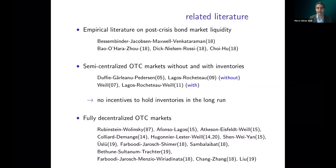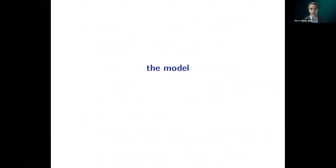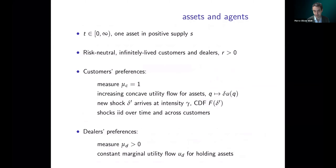As an aside, we believe — though we haven't proved it — that our model is a natural limit of a semi-centralized OTC market where the rate of contact between dealers in the inter-dealer market goes to infinity. Having described the literature, I'll now move on to describe the model.